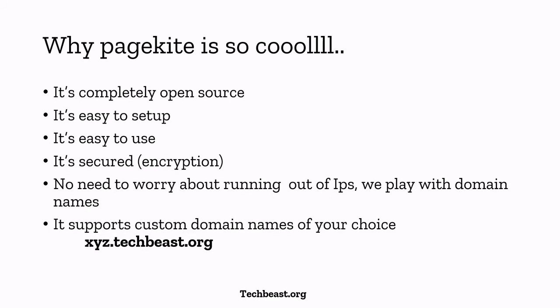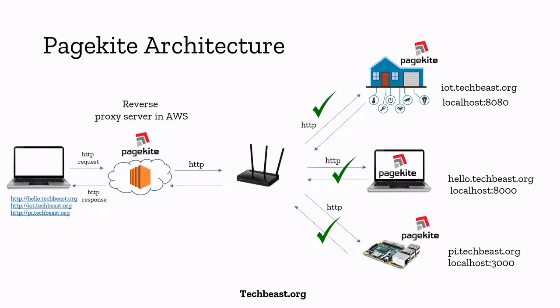Your reverse proxy server running in AWS will have only one public IP address, and you can tunnel all your traffic through that server to your corresponding localhost machines. It also supports custom domain names of your choice. For example, since we own techbeast.org, we use it here — as a domain owner you can read the benefits.